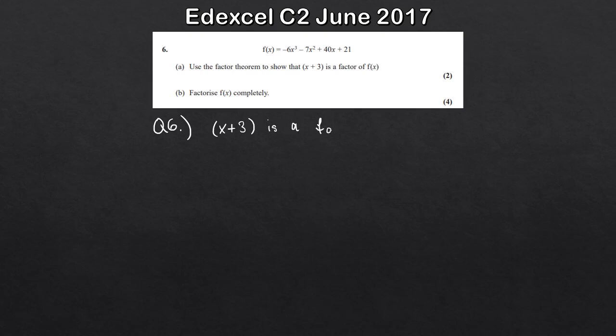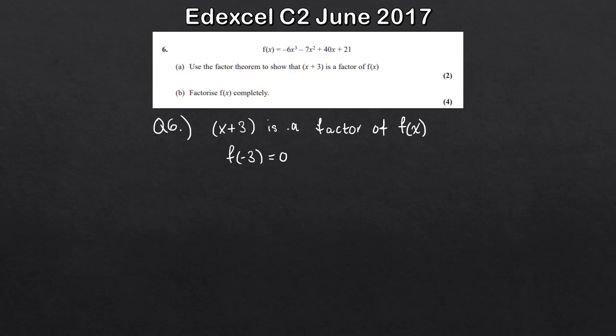So this first question here, question 6, we've got our function f of x, and we're going to use the factor theorem to show that x plus 3 is a factor of f of x. So, if x plus 3 is a factor of f of x, what that means is that f of minus 3 should be equal to 0. That's what the factor theorem tells us. So all we need to do is substitute minus 3 into f of x, just replacing x with minus 3.